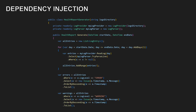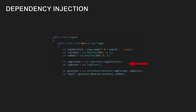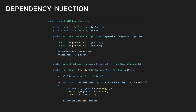We apply dependency injection by moving the object creation outside, usually into the main component of the application, and then inject the created objects back in. For required dependencies, we typically use constructor injection. It ensures that objects can't exist without them. Optional dependencies are often injected through properties or methods.